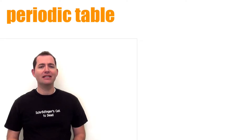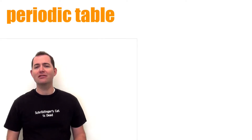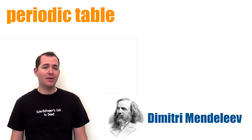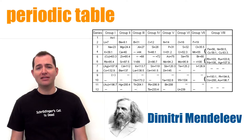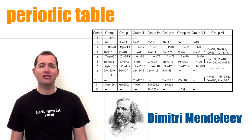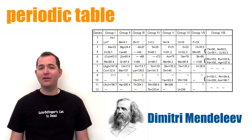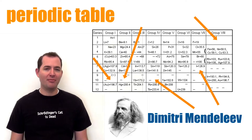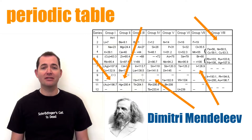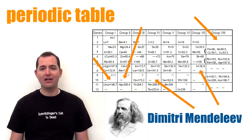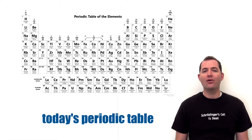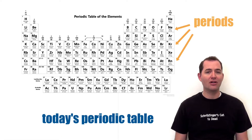The periodic table as we know it today was first developed by Dimitri Mendeleev. There were not as many elements known at that time, but the basic structure was the same. There were even a few gaps in that early periodic table that were used to predict and help discover new elements.